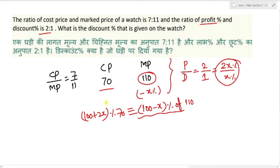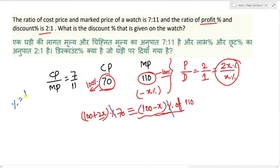Cost price का 100% कितना होगा — खुद 70 — और उसमें 2x percent add करो तो (100 + 2x)% of 70। Mark price का 100% था 110, उसमें से x% कम किया तो (100 - x)% of 110। Percentage से percentage cancel करो — 1/100 cancel हो जाता है।